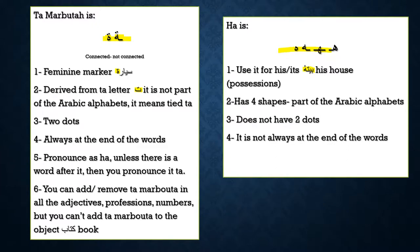Ha is not always at the end of the word. What's always at the end of the word is ta marbuta — but ha has four shapes. So you have to remember: ha is not always at the end of words.